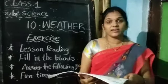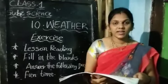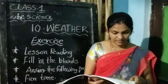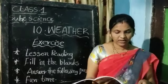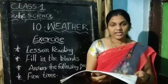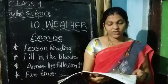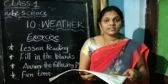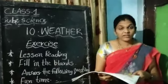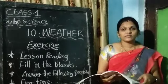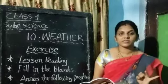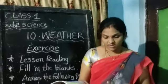How do you feel on sunny days? We feel very hot on sunny days. Third question: how many seasons are there in a year? What are they? There are three main seasons. First one: summer season. Second one: rainy season. Third one: winter season.